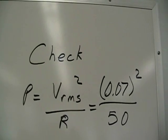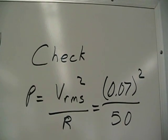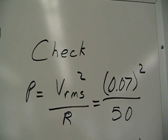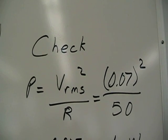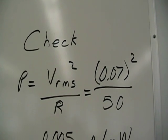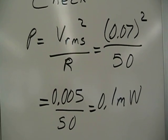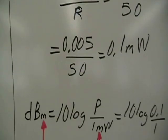Let's do a quick check on our rms to dBm calculation. Power is equal to Vrms squared over R, which is 70 millivolts, 0.07 squared over 50 ohms. This becomes 5 milli over 50, which is 0.1 milliwatt.